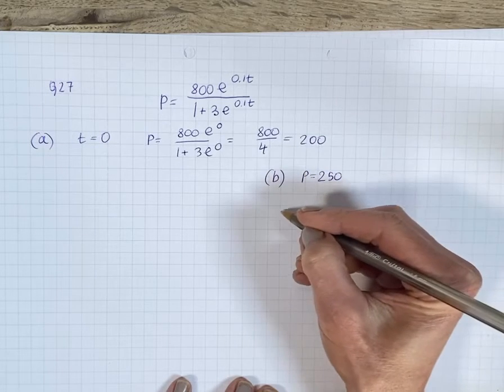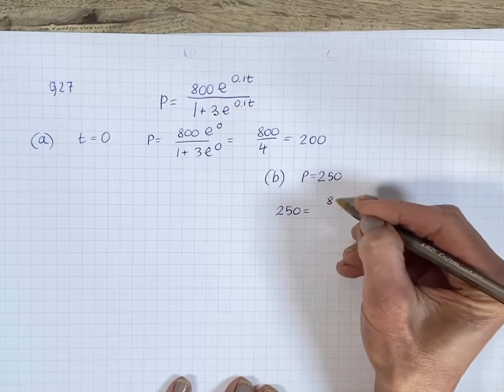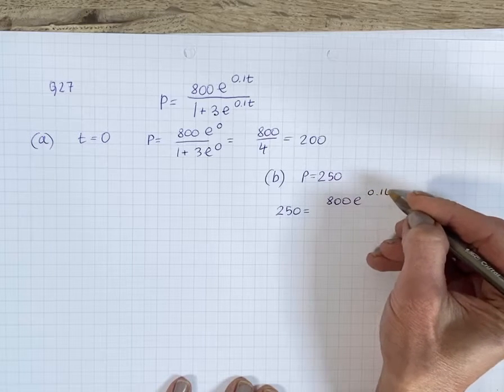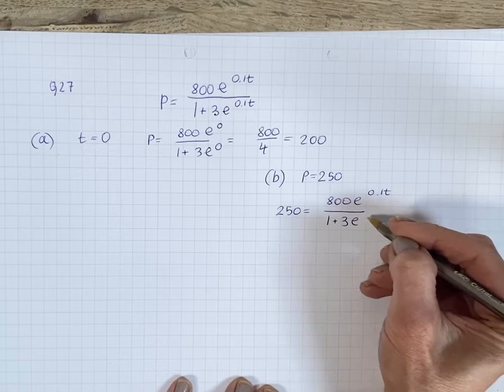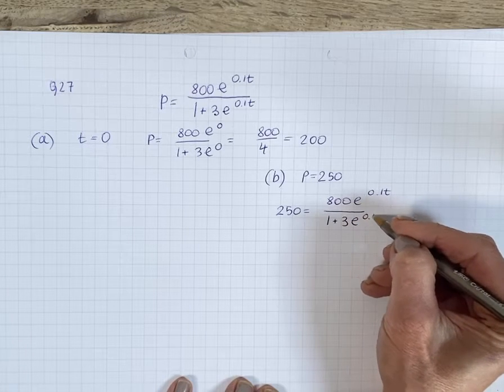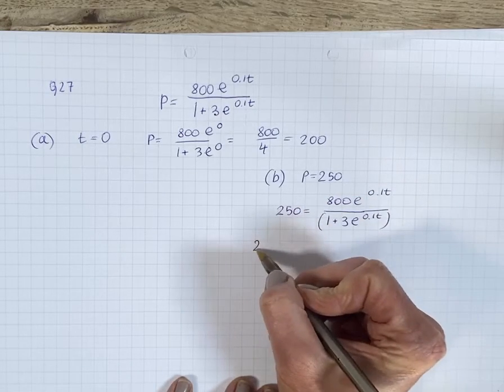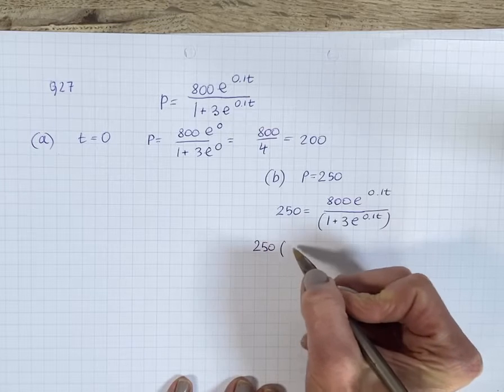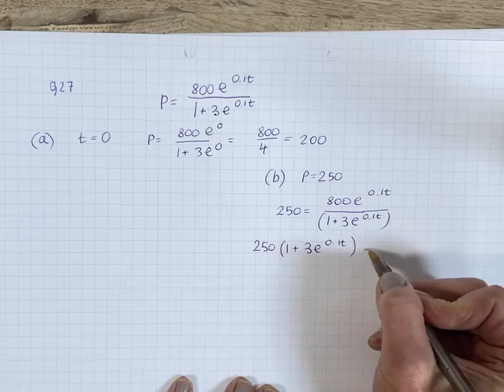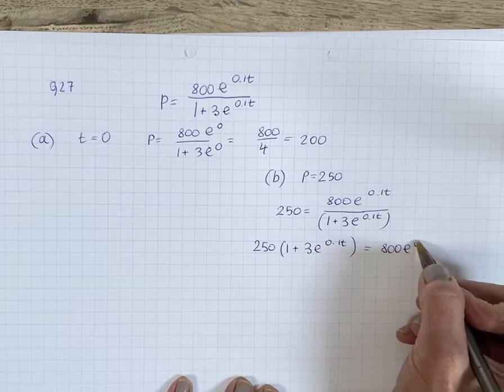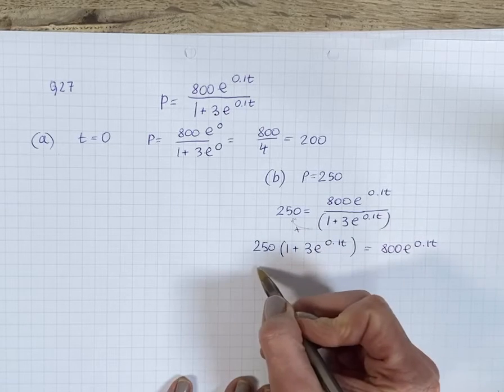So we're going to substitute 250 into the equation, and then the idea is to make e to the power of 0.1t the subject. So the first thing I would do is multiply through by the denominator, so you get rid of the fraction there. And then you expand that.